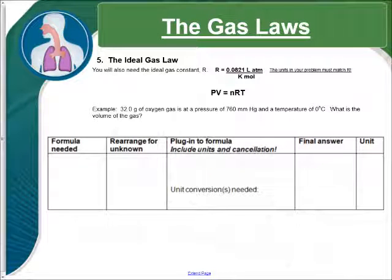Our first example of an ideal gas law problem. We need a constant called R. R is 0.0821 liters atmospheres divided by Kelvin moles. Now, these units are necessary, so all of our units in the rest of our problem needs to match these so that they'll cancel out.